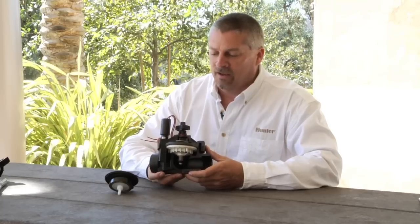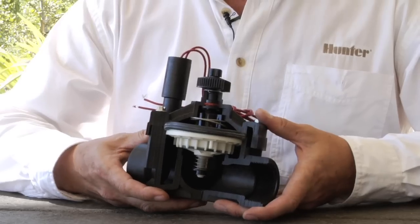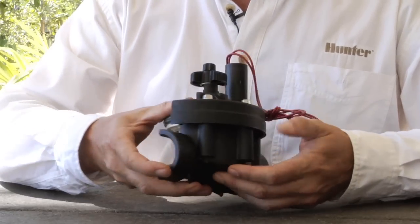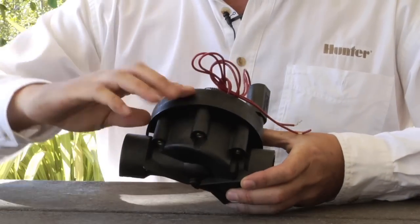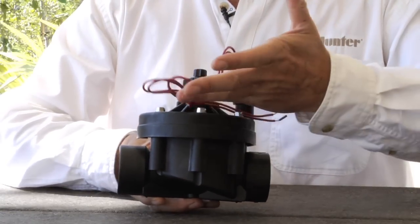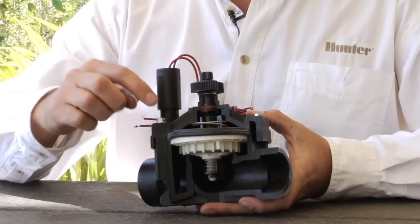So here we have an ICV inline valve. On the topic of general valve operations, we'll start by identifying the various parts of the valve. Here in the lower half is the valve body, and the upper half is called the valve bonnet, and that's held down by the screws.